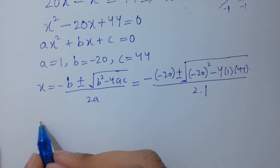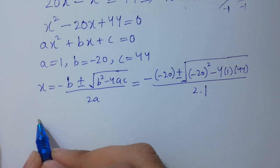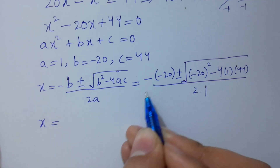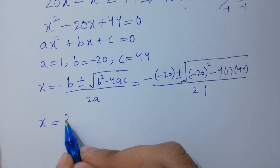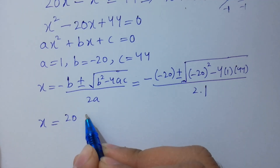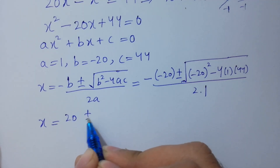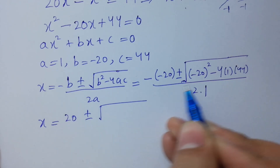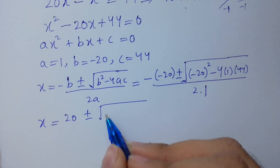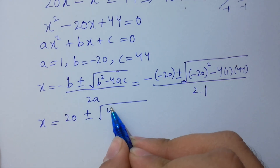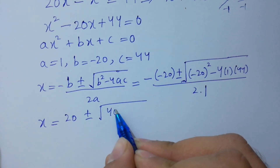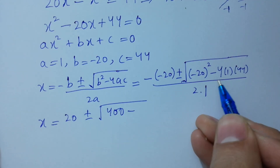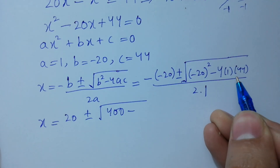x equal to minus of minus 20, plus or minus square root of b squared minus 4 times